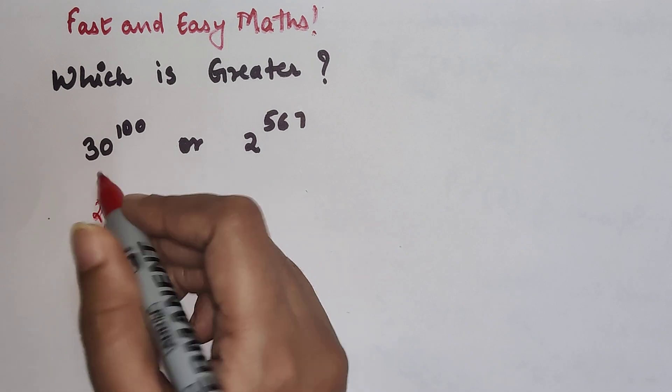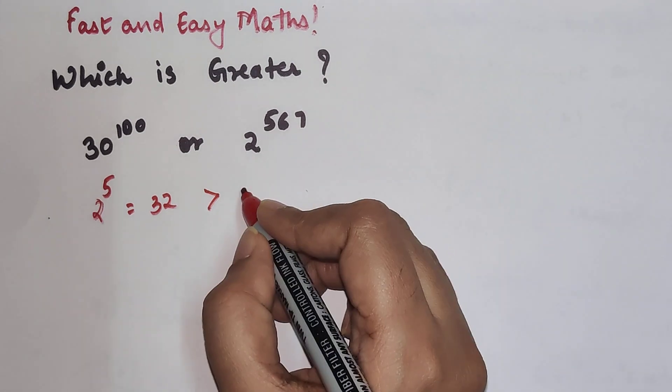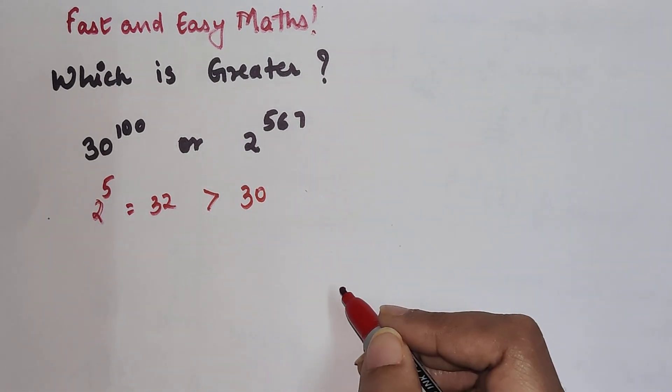So we know that 2 raised to 5 which is equal to 32, and that is greater than 30. Correct.